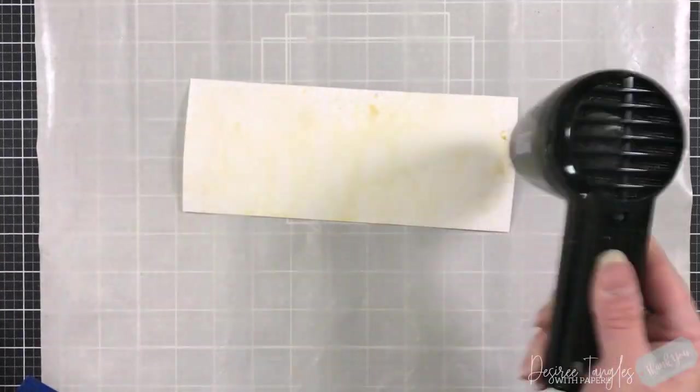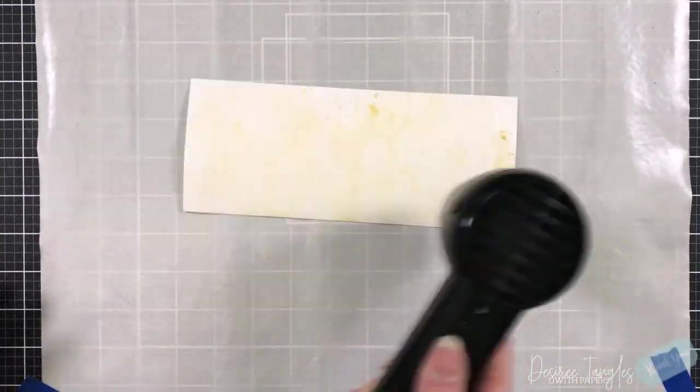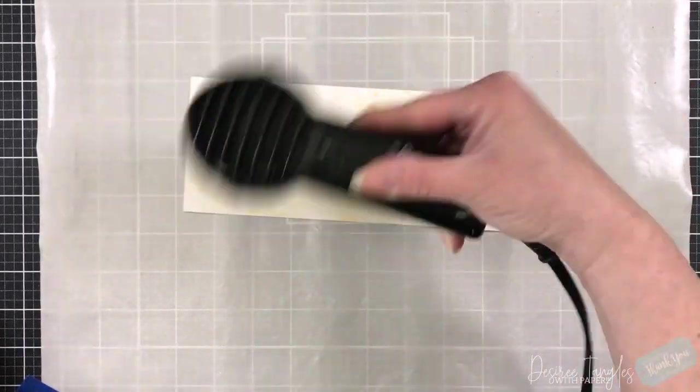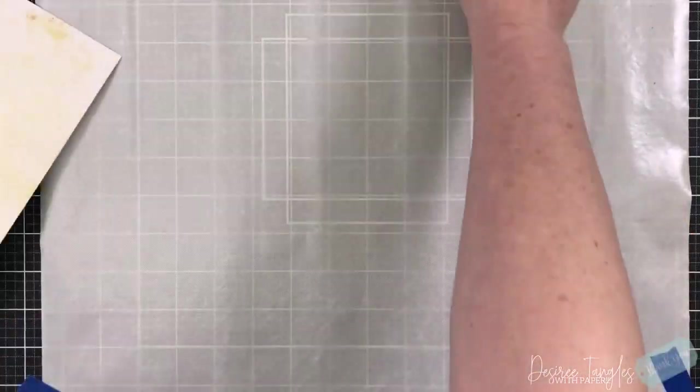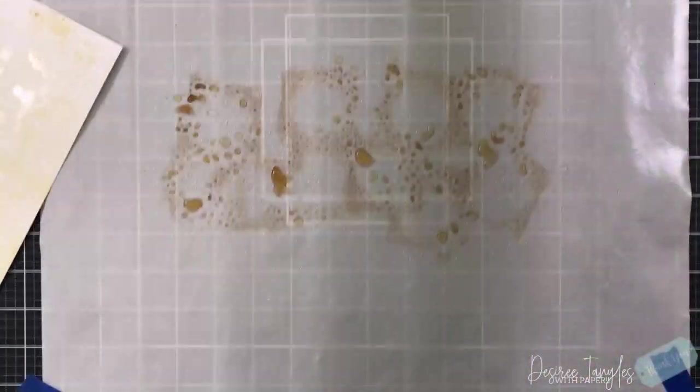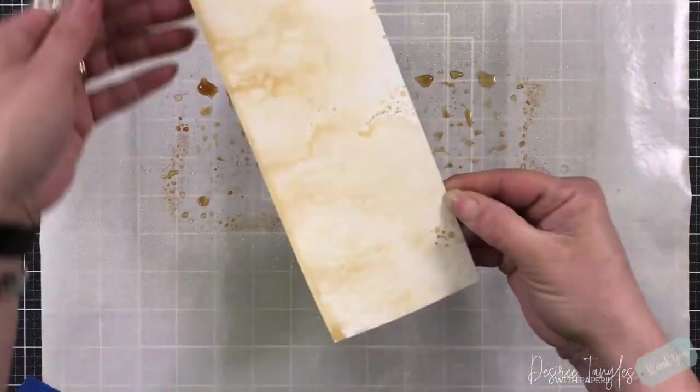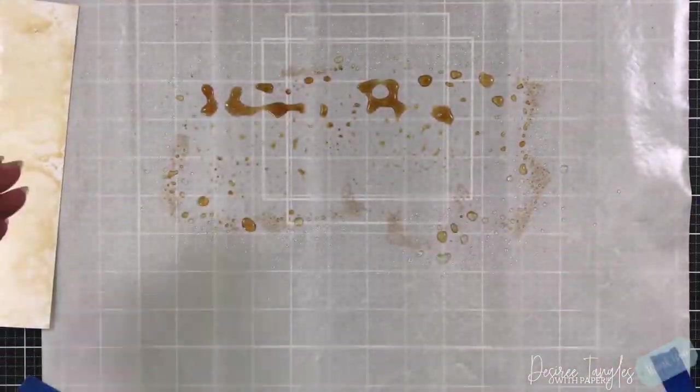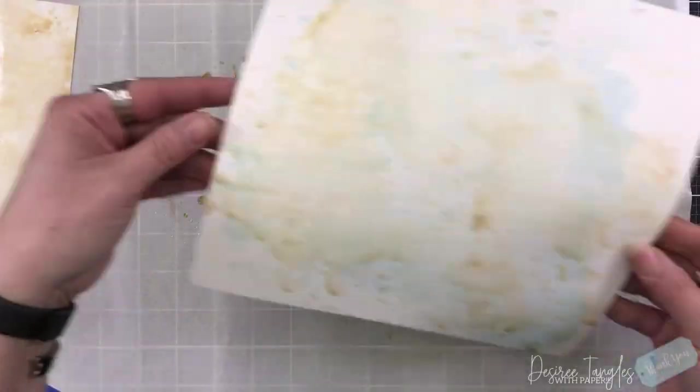Antique linen is usually a light color, but when you put it down heavily you can get this beautiful deep rich yellow glow. I'm going to go over this with vintage photo just to make it a little bit darker.